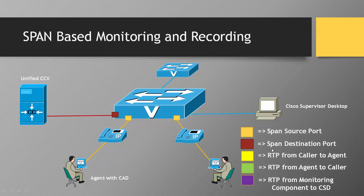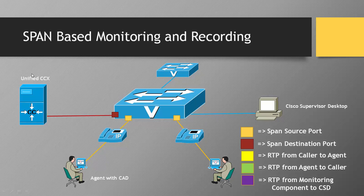The dark red color indicates the span destination port. The RTP from caller to agent — whenever the agent establishes RTP with the caller, we see two different RTP streams: one from the agent to the caller out on the PSTN, and one from the caller outside the PSTN towards the agent. The yellow represents RTP from caller to agent, the green is from agent to caller, and the purple represents RTP packets from the monitoring component to the Cisco supervisor desktop.